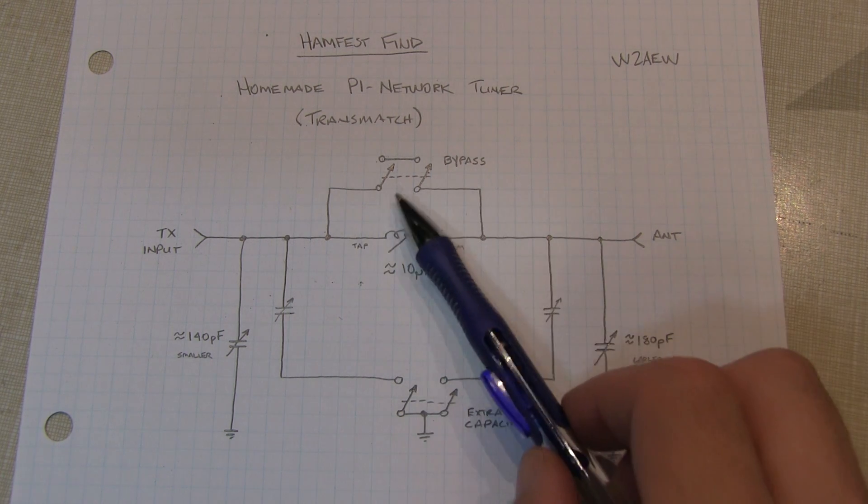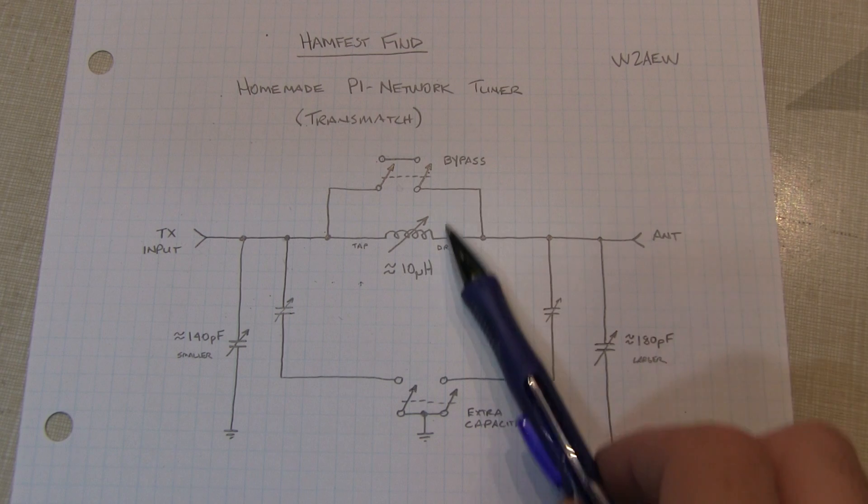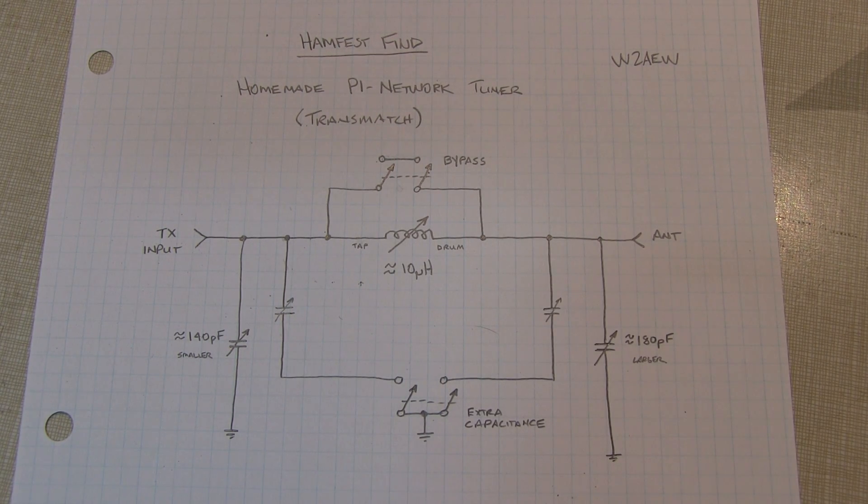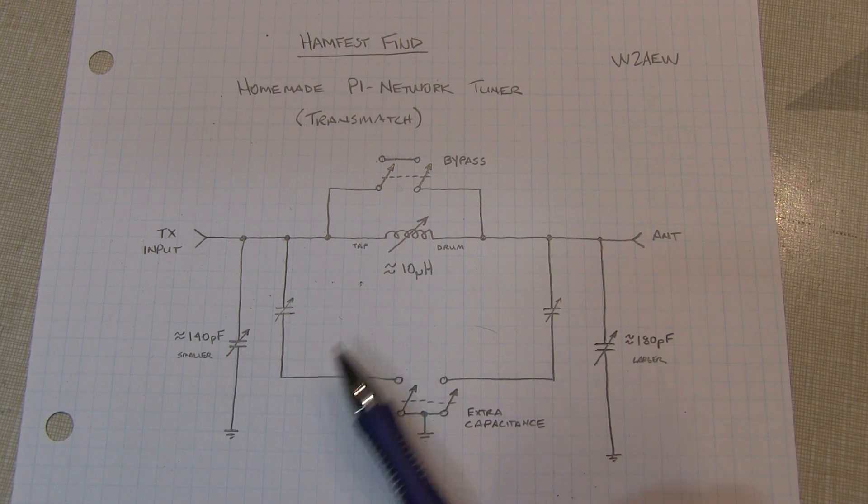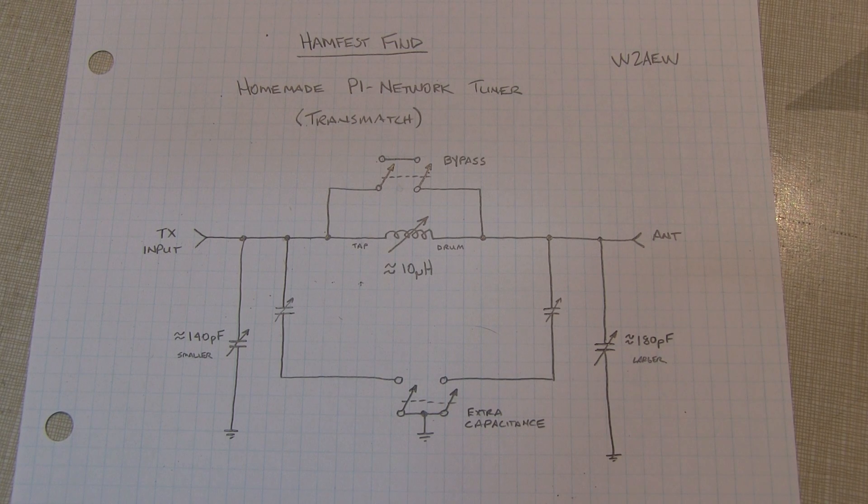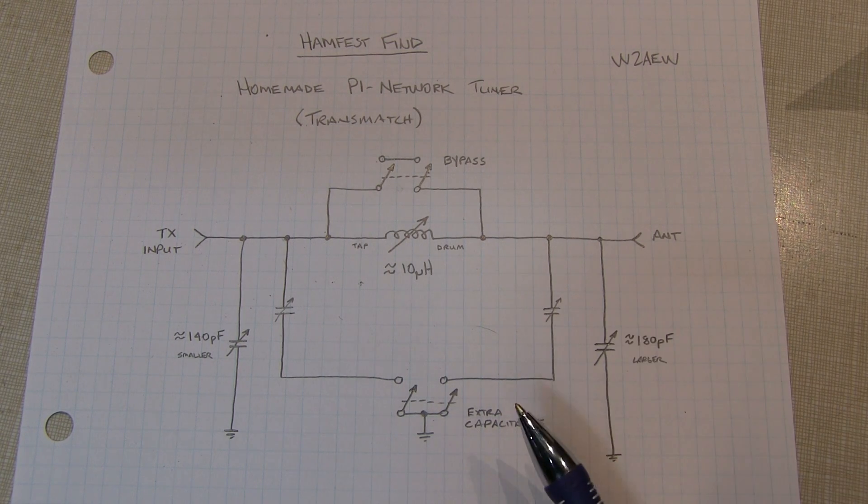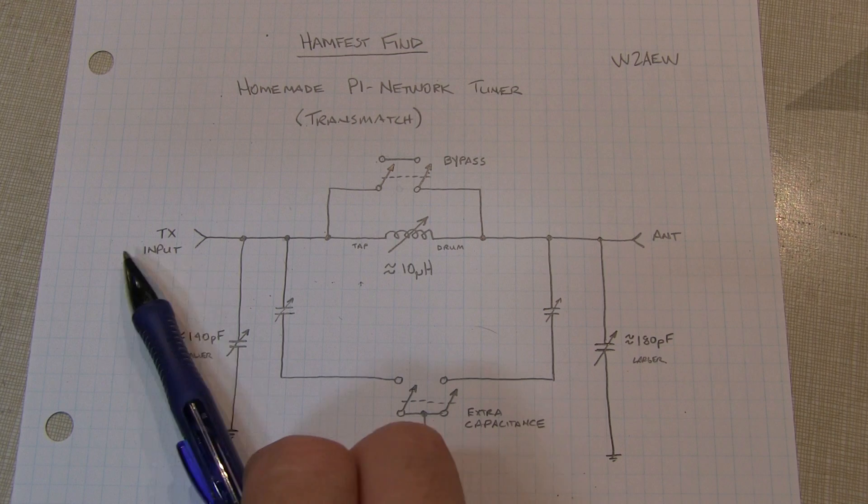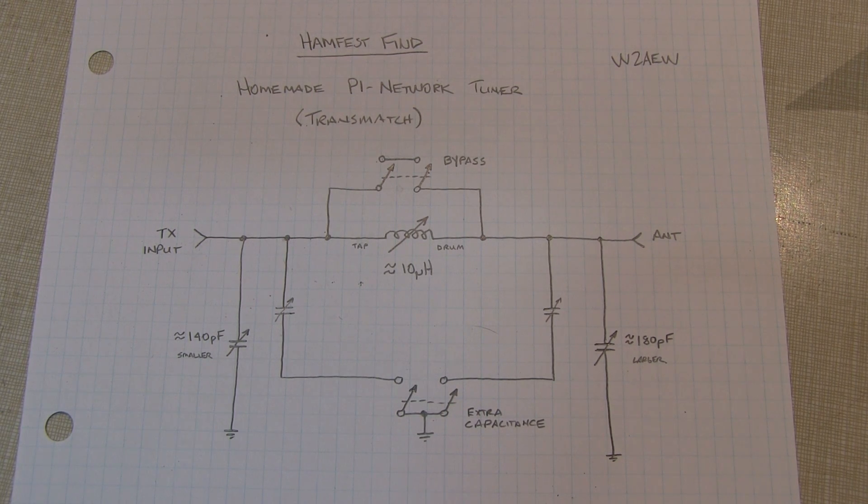So there's a bypass switch here that allows you to essentially bypass the tuner altogether when you're dealing with a resonant antenna or if you want to tune up into a dummy load or something like that first, and then you can come out of bypass and actually use the tuned circuit to adjust the impedance of your antenna system to make the transmitter look like it's looking into its ideal load or a matched load, most often 50 ohms.